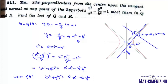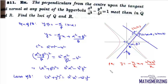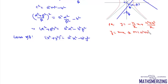Now we will find the locus of point R. In the same way, if we take this point as (h, k), then the equation of PR is y = (−h/k)x + (h² + k²)/k. We know the equation of the normal in terms of slope is y = mx ± m(a² + b²) / √(a² − m²b²). Both these lines represent the same normal.